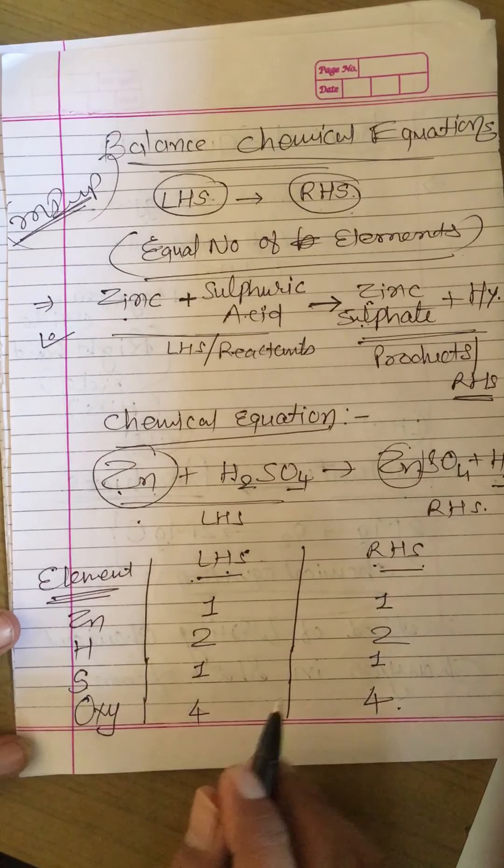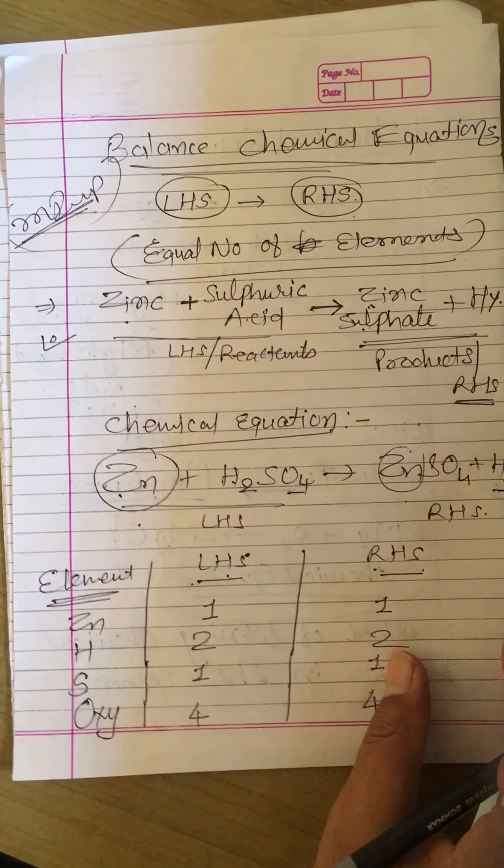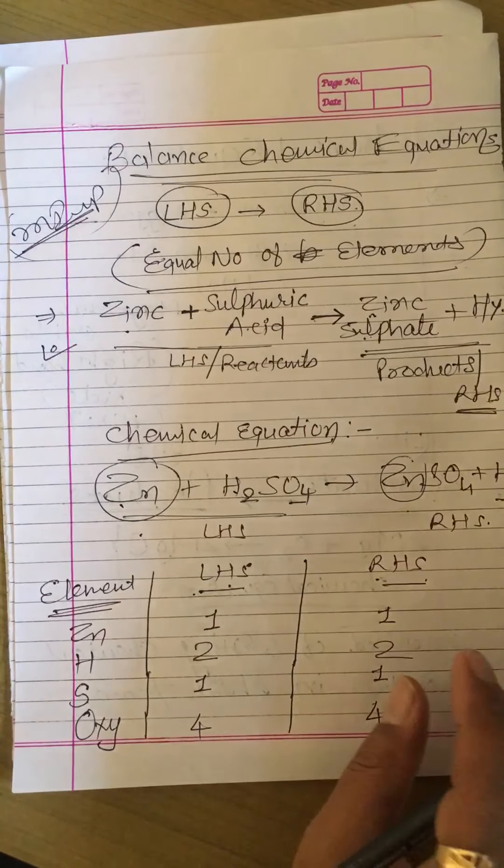So we can say this is a balanced chemical equation. We will learn friends how to do balancing one by one. Let's take one example.